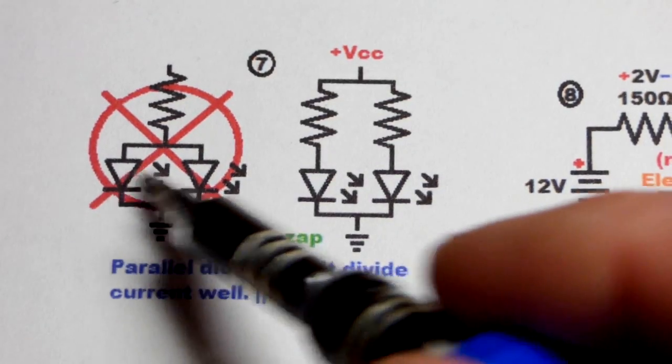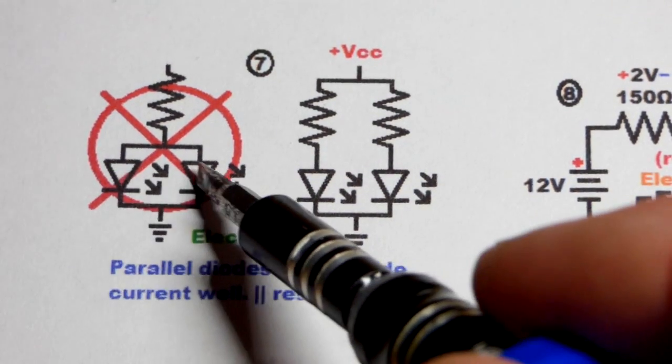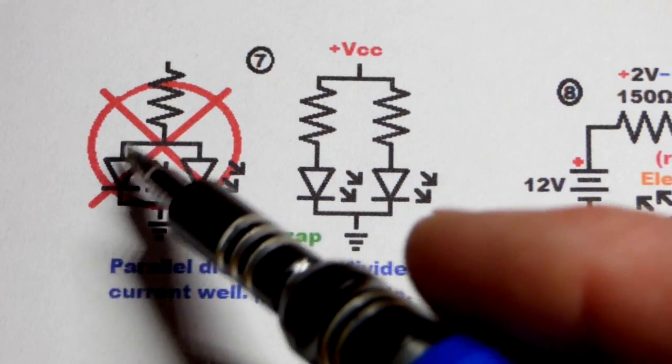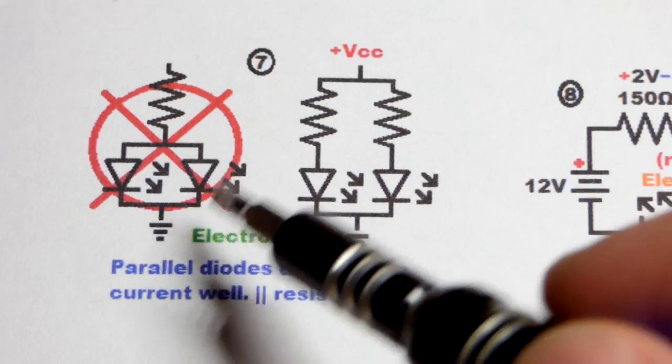So now if you want to light up multiple LEDs, it's common to make them parallel, but you don't want to have them share the same resistor.